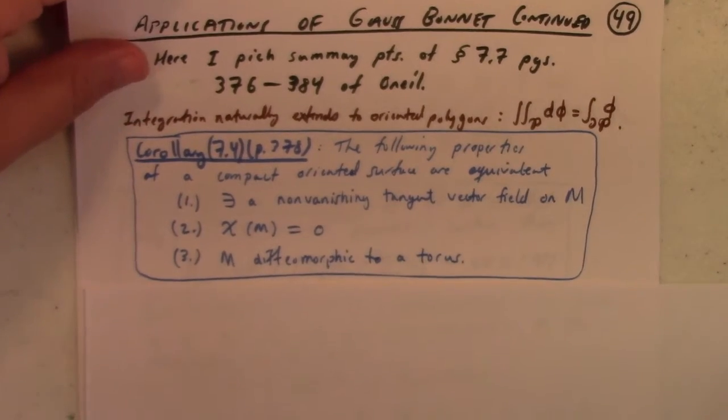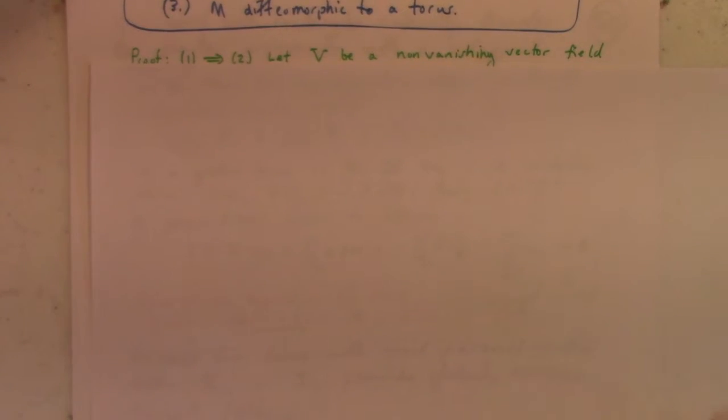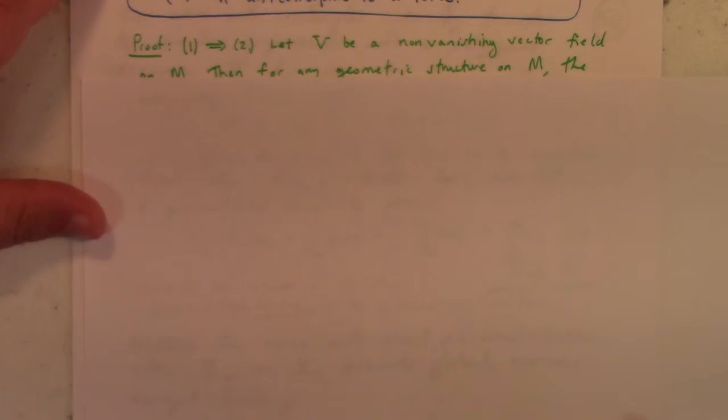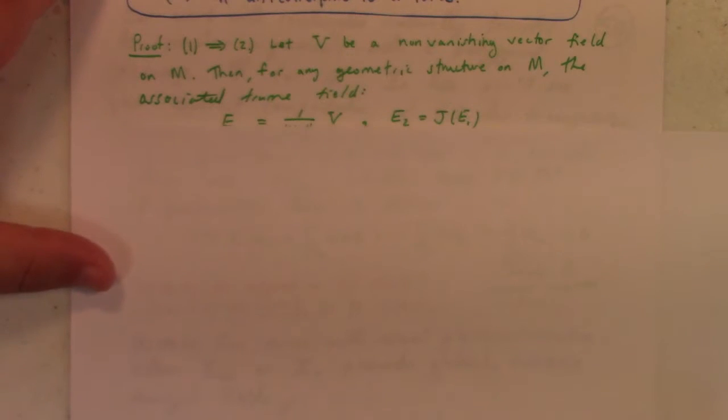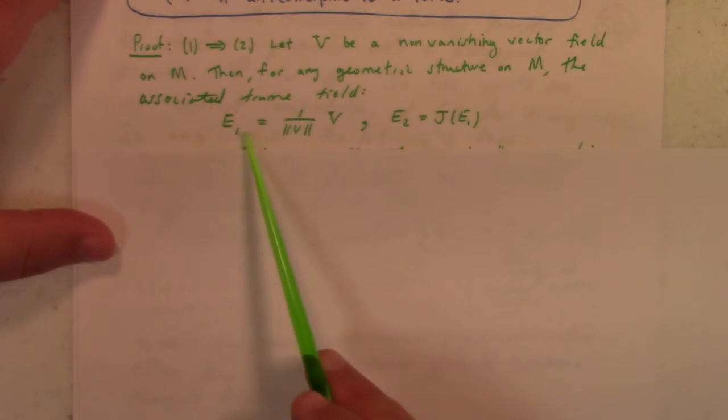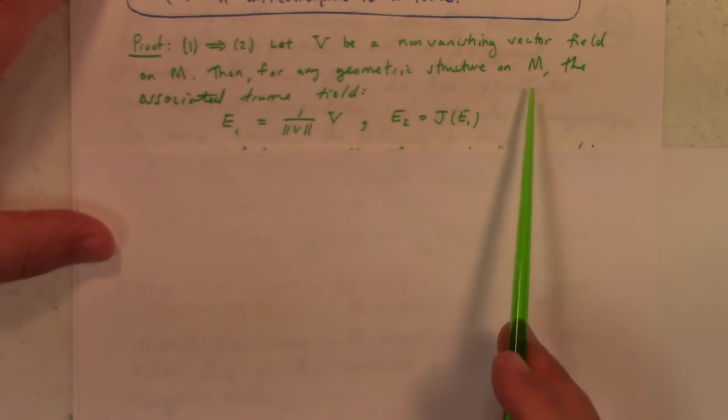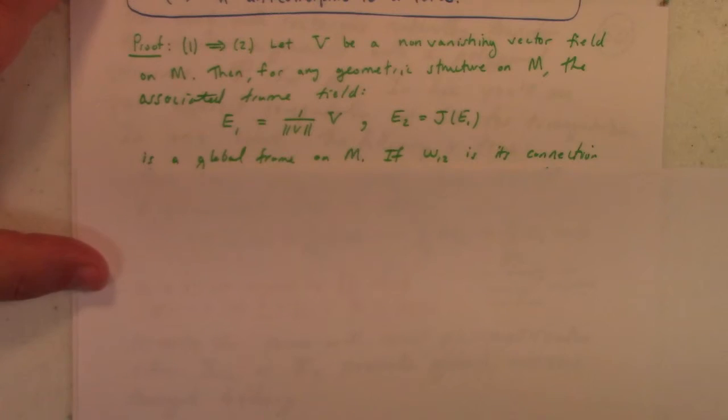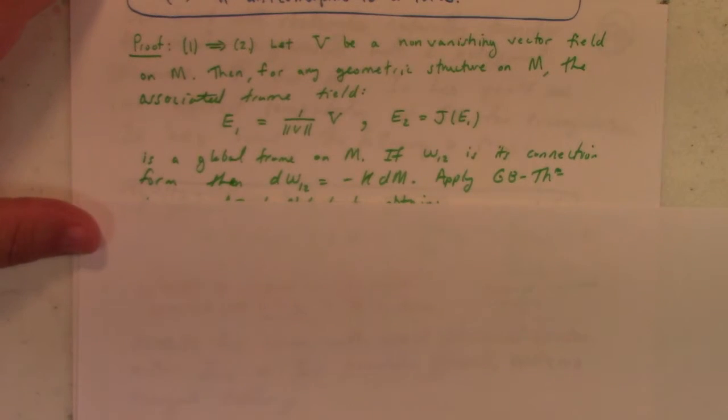We'll prove one implies two. Let V be a non-vanishing vector field on M. Then for any geometric structure, we can build an associated frame field from a non-vanishing vector field. You normalize the vector field—that gives you E1. Since M is oriented, E2 is J of E1. That gives us a global frame on M. If ω_12 is its connection form, then dω_12 equals minus k dM.